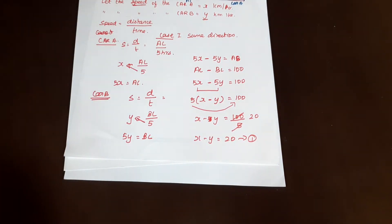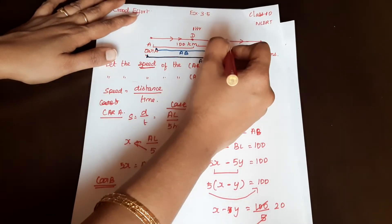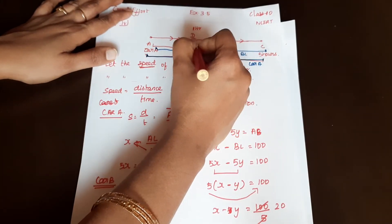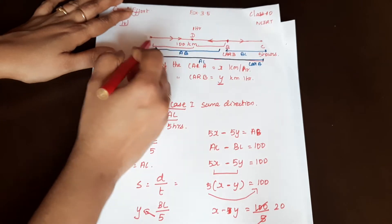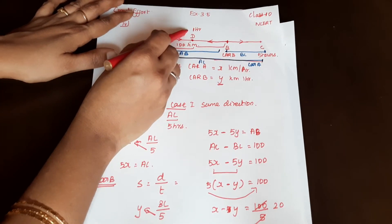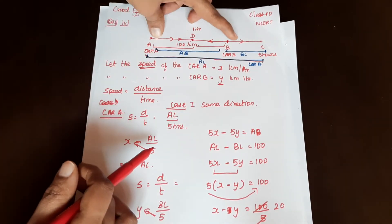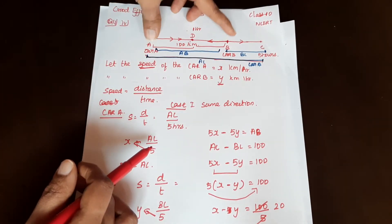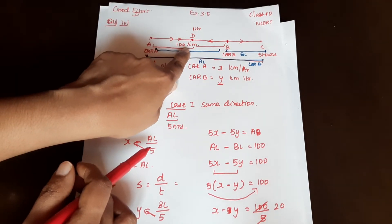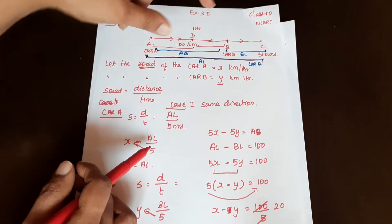Now for Case 2: the cars travel towards each other. They meet in 1 hour. The total distance covered is AB, which is 100 km. Using speed equals distance by time, we can form equation 2.